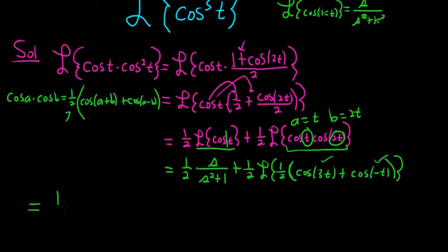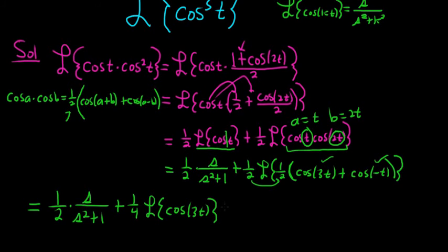This is equal to, I'm going to come way over here so I have more room, 1 half times s over s squared plus 1. And we can break this up. This is plus, we can distribute the 1 half through. So 1 fourth Laplace of cosine of 3t, and then again distribute the 1 fourth plus 1 fourth Laplace of cosine of t. What happened to the negative? Oh, cosine is even. Even functions eat negative signs. The cosine of negative x is equal to the cosine of x for all x. So it's an even function, so it devours negative signs.